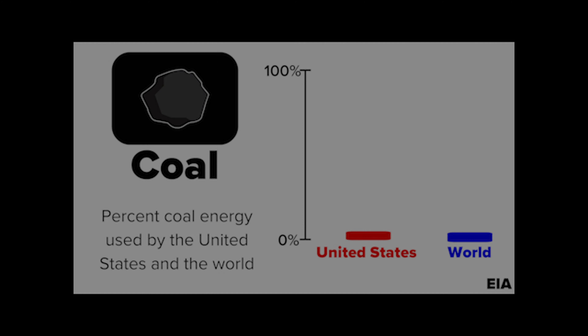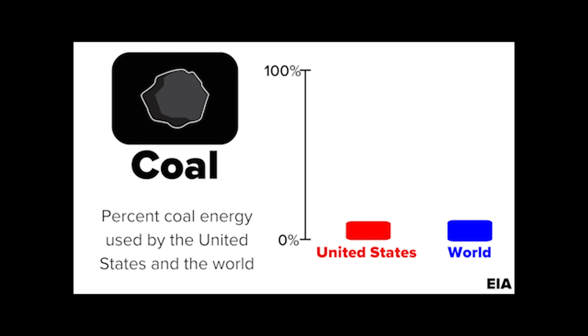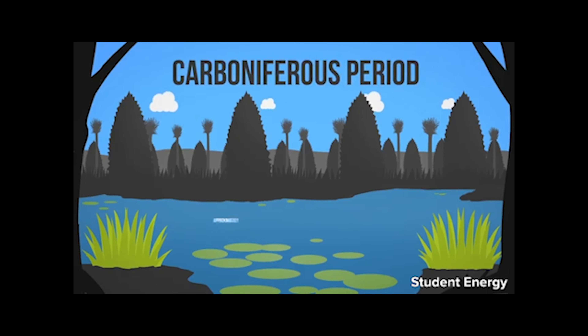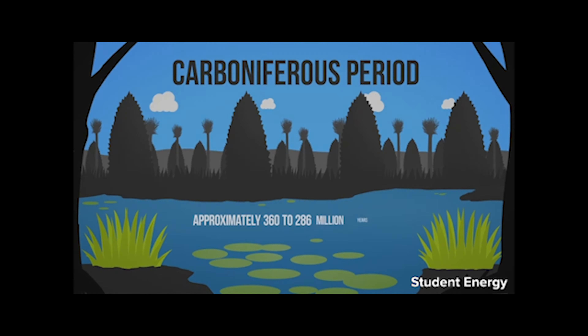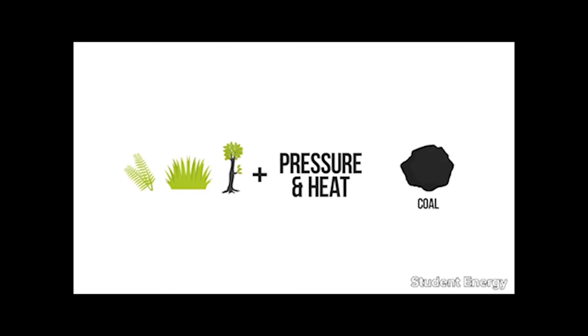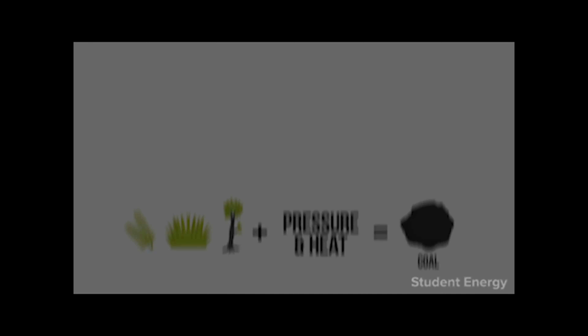Coal is a combustible rock with a high carbon content. Many of the world's coal deposits formed millions of years ago during the aptly named Carboniferous Period, when the Earth was covered with huge swampy forests which eventually formed layers of coal.